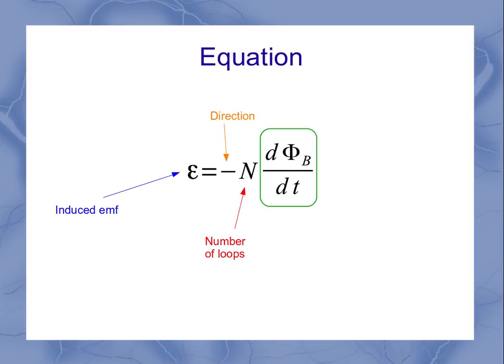But now I want to take this whole quantity and represent it as one thing, d phi dt, which is the rate of flux change.